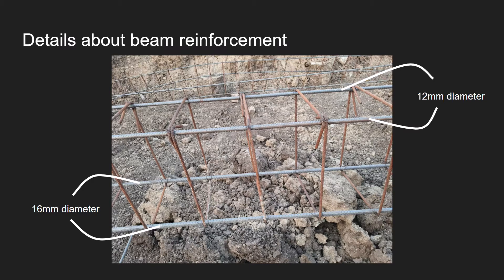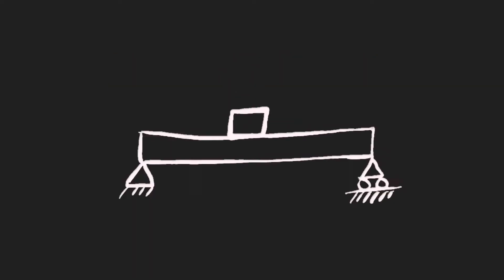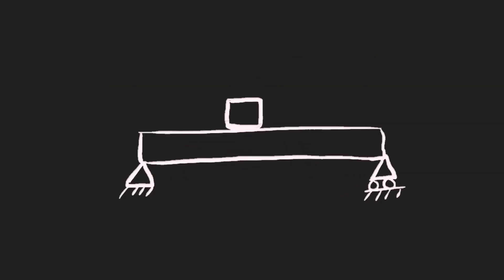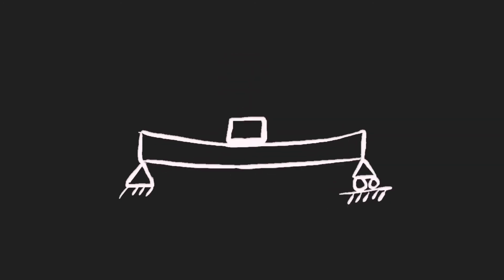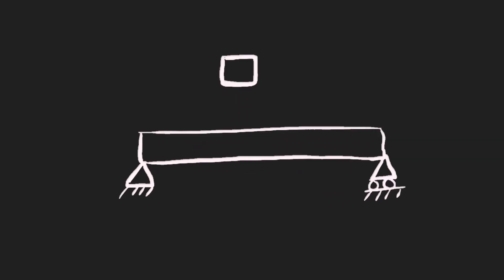To get to the answer, imagine if we give force on the beam, i.e. put a load on it. How do you think would the beam bend? Now looking at the GIF, can you tell where would tension and compression occur in the given beam when it bends?